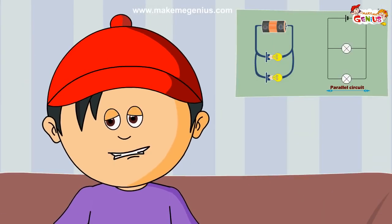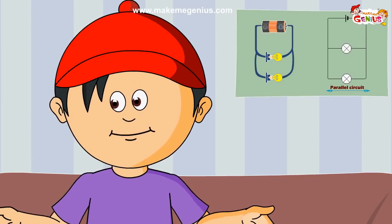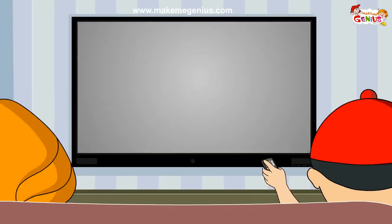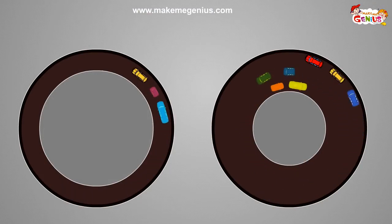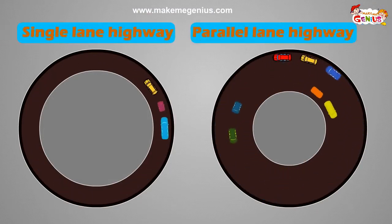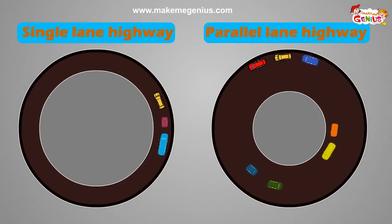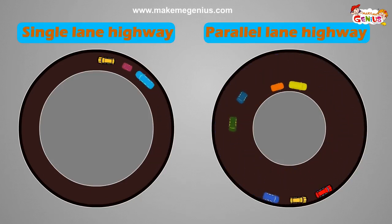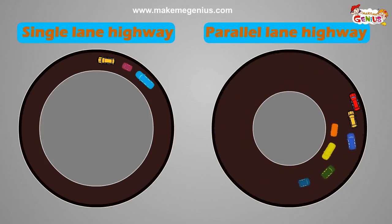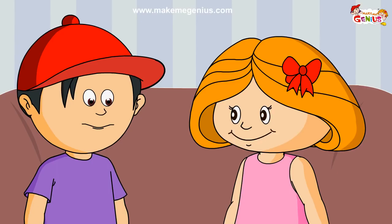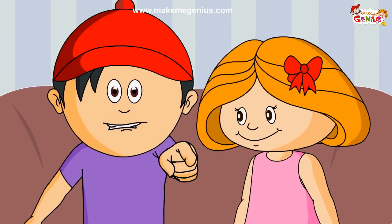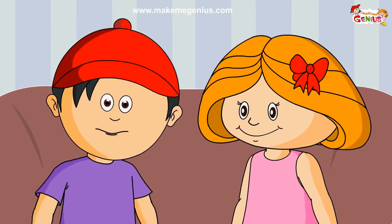I can tell the difference between series and parallel circuit in a very simple way. Look, there are two types of highways. One is a single lane highway and another is a parallel lane highway. A single lane highway is like a series circuit — one car stops and the whole traffic stops. And a multi-lane highway is like a parallel circuit — even if a car breaks down, the rest of the cars can keep moving. Very good way to compare both the circuits. You should watch MakeMeGenius.com every day.